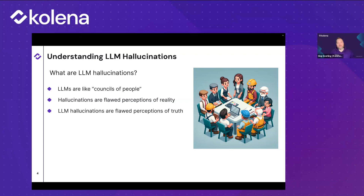So if I'm understanding that correctly, hallucinations can be understood as a model's incorrect or misleading outputs — anything deviating from the truth. And these deviations could range from a subtle difference to an outright contradiction. So there are degrees of severity in hallucinations. Does that sound correct?